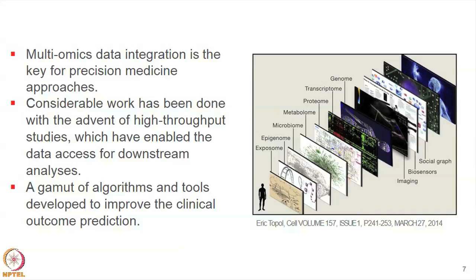Coming back to multi-omics data: the earlier example was just genomic data. But there are so many facets — transcriptome, proteome, metabolome, exposome, epigenome, and the social graph with patient demographics. There is also imaging data and biosensors. You have to bring all of them together to actually make sense of it if you want to achieve the goal of precision medicine — personalized medicine.